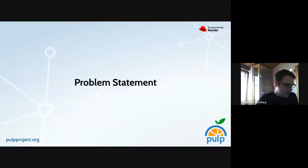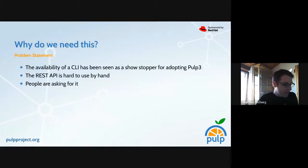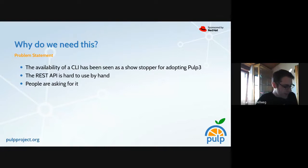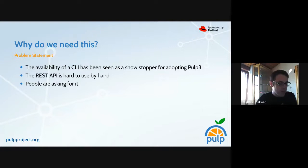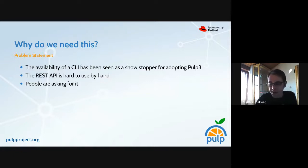There is obviously a problem, and the question is: why do we even need a CLI? I have put up three answers. The availability of a CLI has been seen as a show stopper for adopting Pulp 3 over Pulp 2 or other software. The REST API we provide is rather hard to use by hand, and in the end, people keep asking where's the CLI — so maybe that's reason enough to deliver.